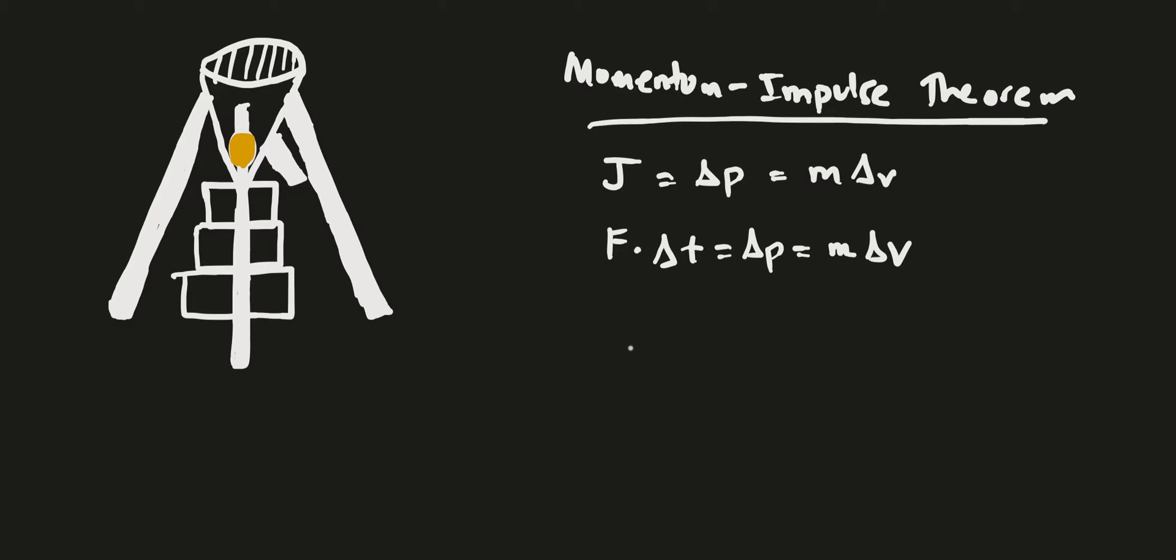So if we equate these two we get F·Δt = m·Δv. This is essentially what we need. This is the momentum impulse theorem.